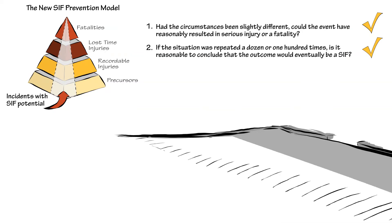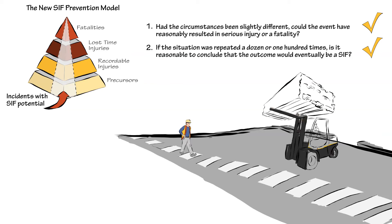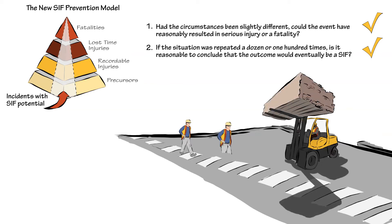In our example, a forklift carrying three lumber packages spills them across the main designated crosswalk — no one was injured. What if there had been a person on the crosswalk? If this had been repeated numerous times, do you think that eventually there might have been someone on the crosswalk when the incident occurred? Is our example a SIFP incident? The answer to both questions is yes, and we can conclude that this incident should be considered a SIFP.